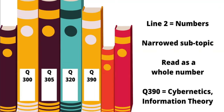Line 2 consists of numbers and indicates the narrow subtopic of information found in the item. This line should be read as a whole number. For example, 300 would come before 390 since it is a smaller number.